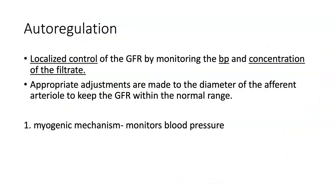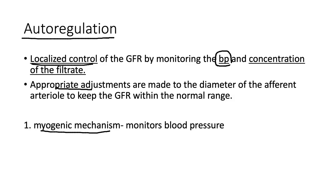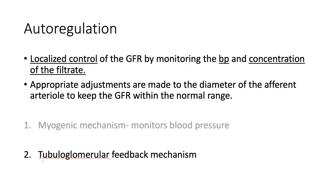The juxtaglomerular apparatus monitors blood pressure — that's known as a myogenic mechanism. Those smooth muscle cells sense blood pressure: if there's a lot of stretch there's high pressure, and if there's no stretch there's low pressure. Appropriate adjustments are then made to the diameter of the afferent arteriole just to keep the glomerular filtration rate within the normal range. It's like autopilot.